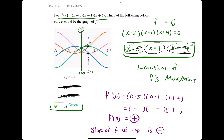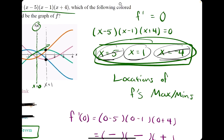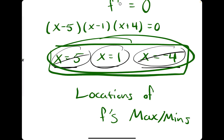One note: you don't have to plug in zero every time, but it works well since it's a nice number. You could plug in any value that is not one of the critical x values.